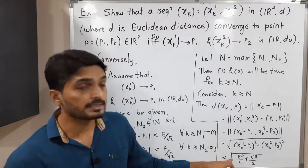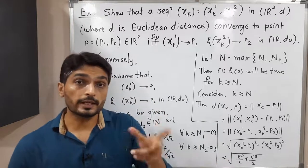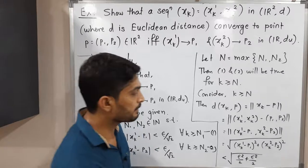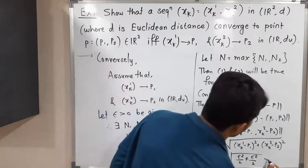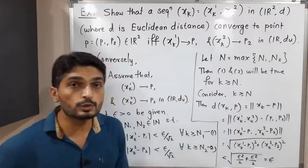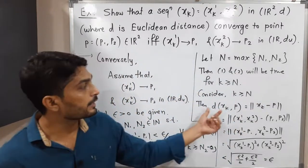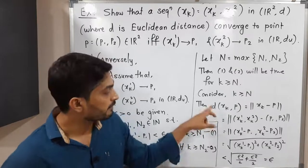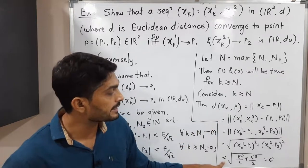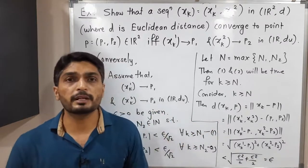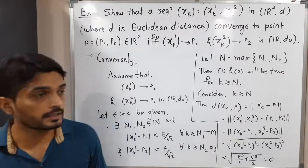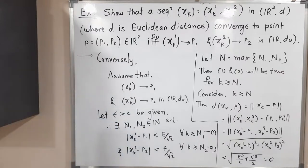The square and square root cancel each other, and we simply get epsilon. So we started with d(xk, p) and finished with less than epsilon. This is nothing but the definition of a convergent sequence.